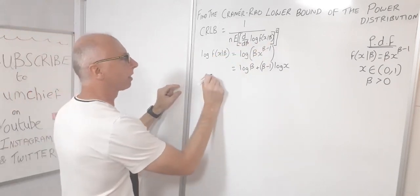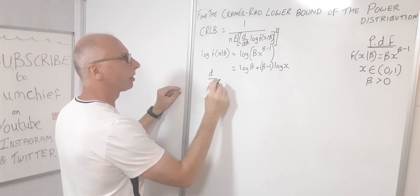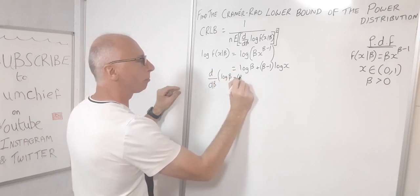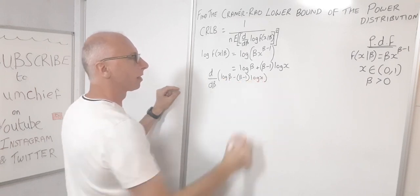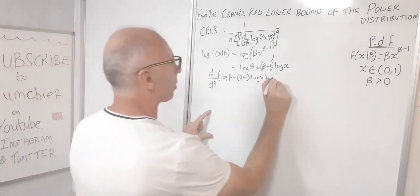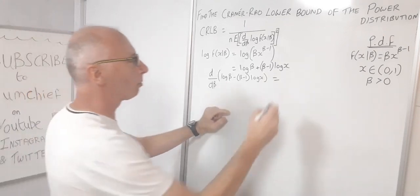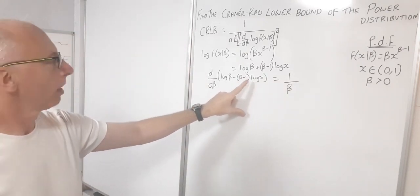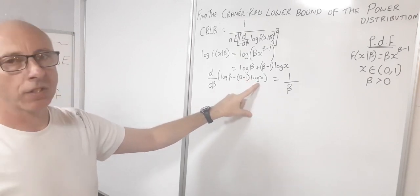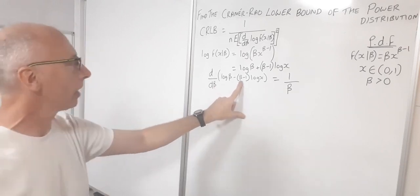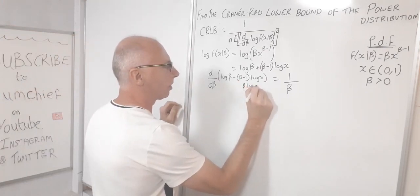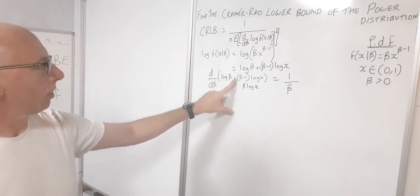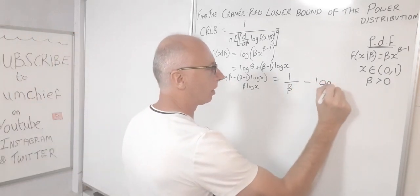Now let's take the derivative of that with respect to β. We have log(β) + (β-1)·log(x). The derivative of log(β) is 1/β. The term β·log(x) differentiates to log(x), and -1·log(x) is a constant in β so it disappears. So the derivative is 1/β minus log(x).